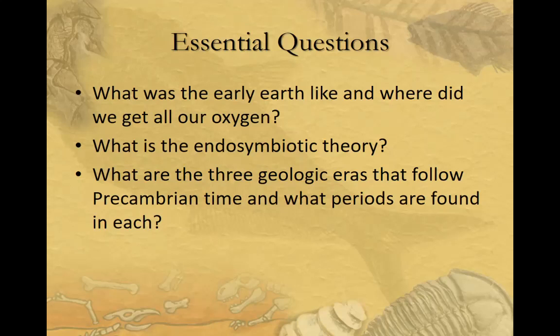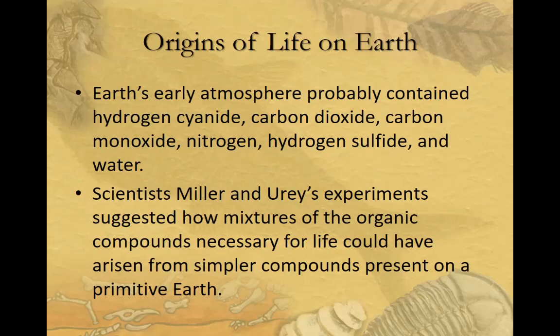Looking at evidence of the early Earth's makeup, it probably was not hospitable to life as we see today. The early atmosphere likely contained hydrogen cyanide, carbon dioxide, carbon monoxide, nitrogen, hydrogen sulfide, and water. Most of those are not hospitable to life. Scientists Miller and Urey suggested that mixtures of these organic compounds believed to be in the early atmosphere could have had the materials needed to create primitive life.